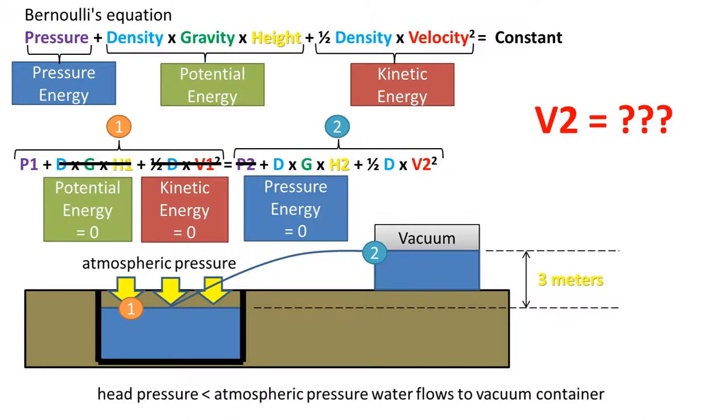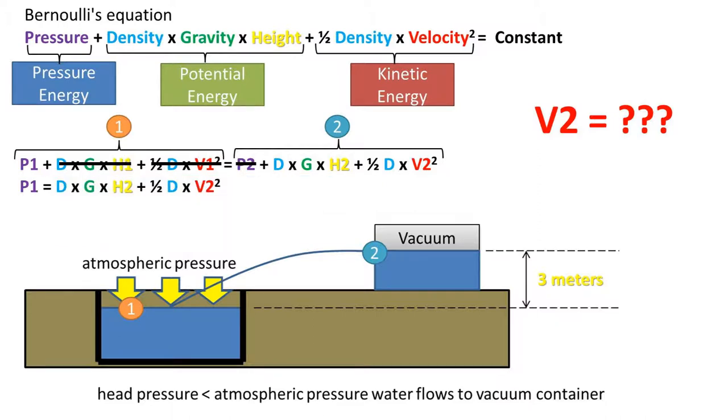The potential energy and velocity at point one is zero, and the pressure at point two is zero, so all these values can be removed. This leaves us with this equation. Next, we can rearrange the formula to get velocity two by itself. We are left with the square root of two times the pressure at point one minus the density of water times the acceleration due to gravity times the height difference at point two, all divided by the density of water is equal to velocity two.